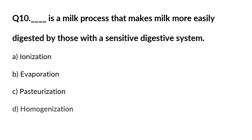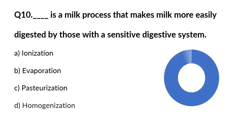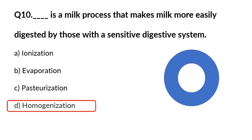Question number 10. Homogenization is a milk process that makes milk more easily digested by those with a sensitive digestive system. A ionization, B vaporization, C punctualization, D homogenization. Answer is D homogenization.